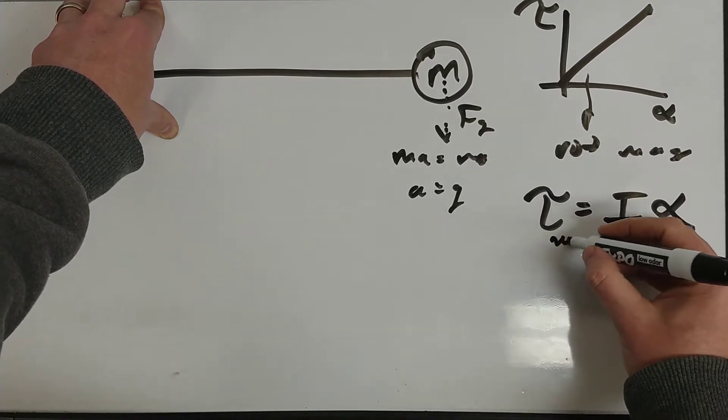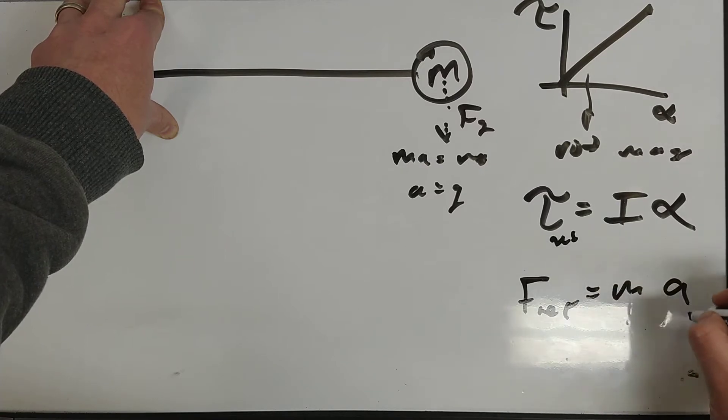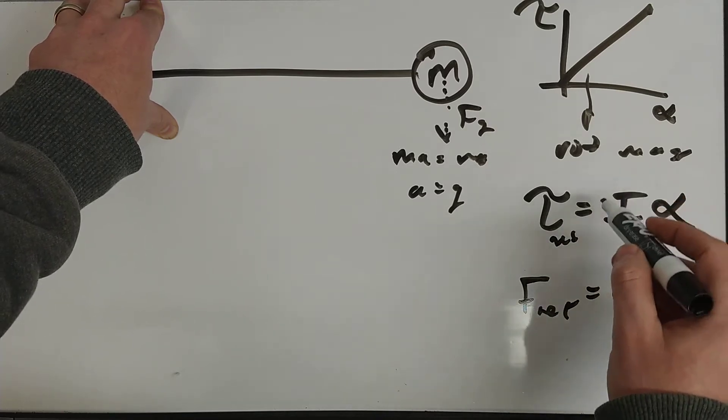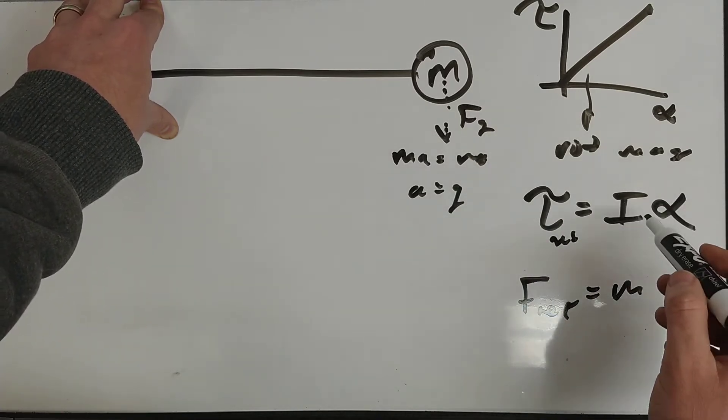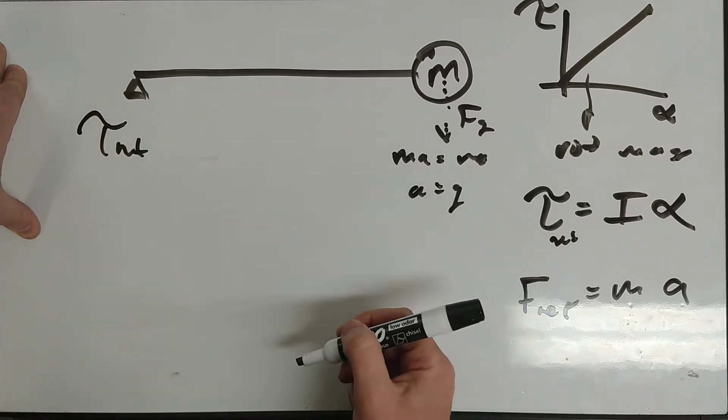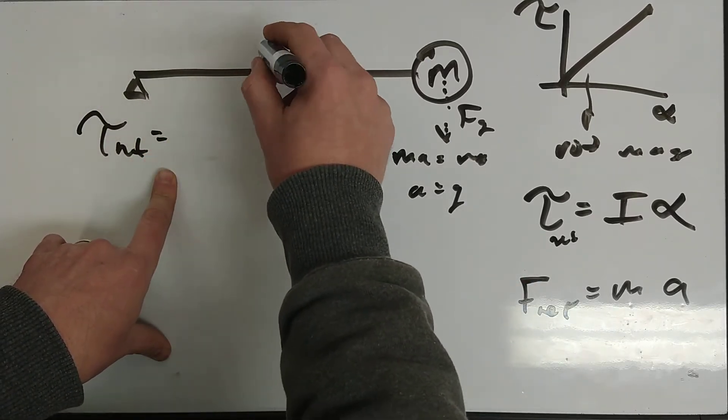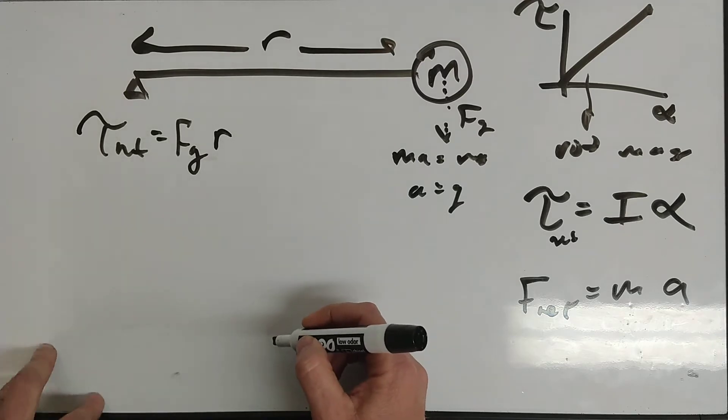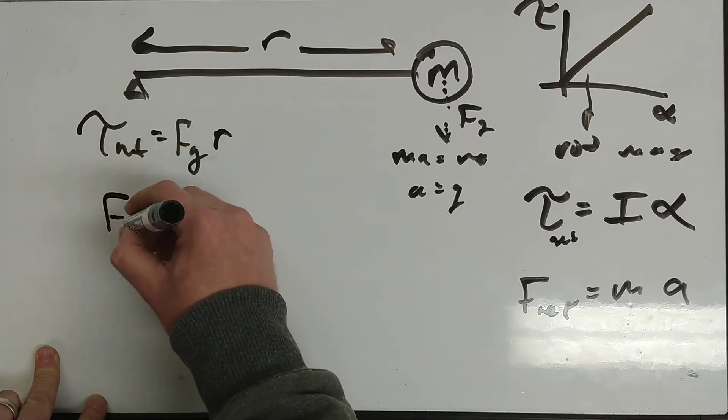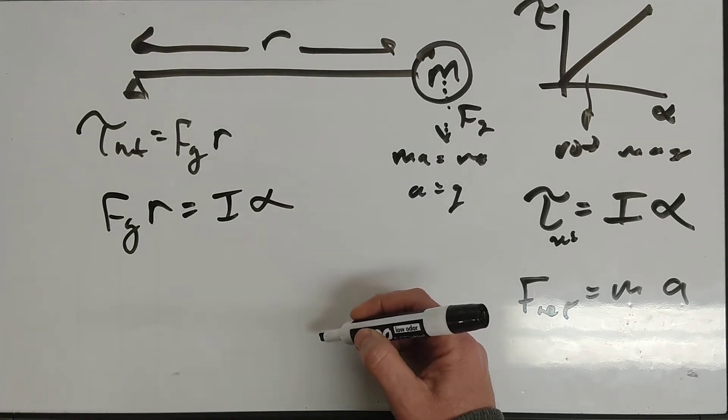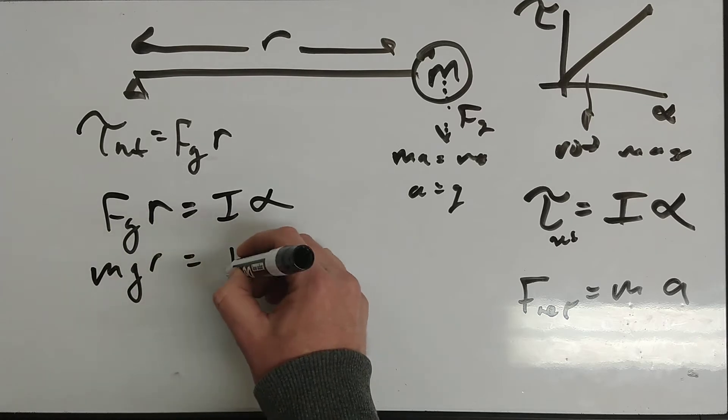So if torque net equals I alpha and F net equals MA, let's figure out what this moment inertia must be here, like what is this in terms of M's and that sort of thing. So I'm going to look at the net torque of this, so torque net equals I alpha, but the net torque of this is simply, let's say this is the radius here, it's the force of gravity times R. So FGR must be equal to I alpha.